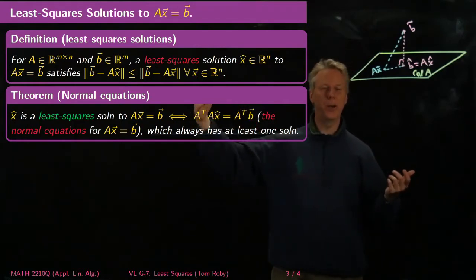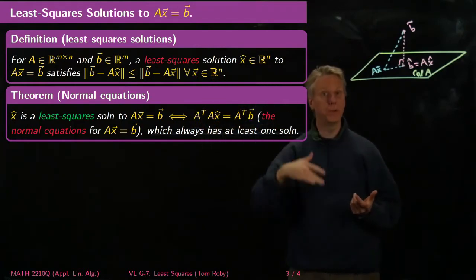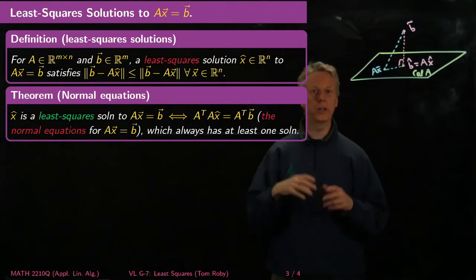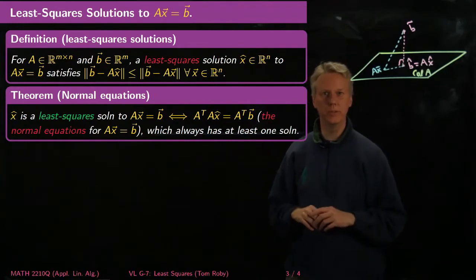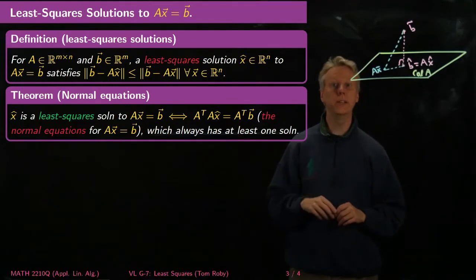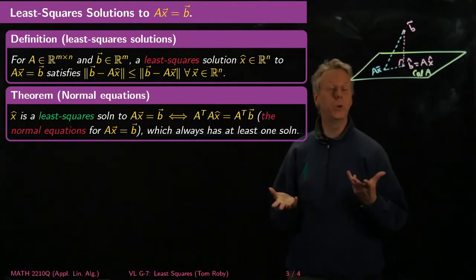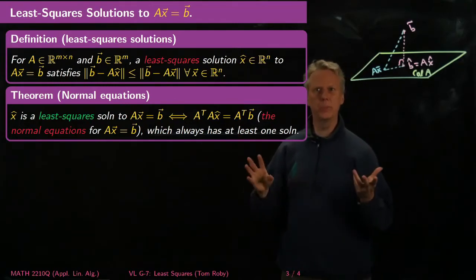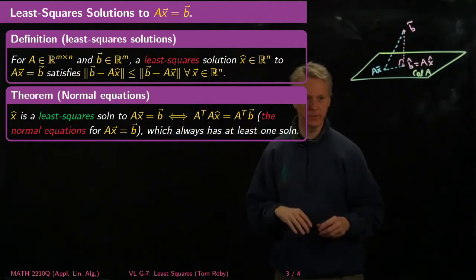Those are called the normal equations for AX equals B, because a matrix equation usually represents multiple equations all compressed into a single piece of notation. And what's even better is that there always is at least one solution to this. Sometimes there can be multiple solutions, but there's always at least one solution.